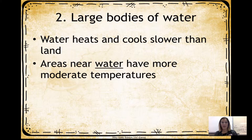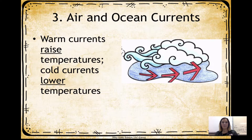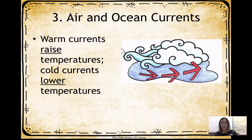Areas near water have more moderate temperatures, and land cools much slower. It depends on where the body of water is and how large it is. A lot of times you might hear of lake effect snow — Chicago area, or even the Cedar Point region, because Cedar Point lies right on a big body of water. They get a lot of lake effect precipitation. Air and ocean currents also matter: warm currents raise temperatures, cold currents lower temperatures.